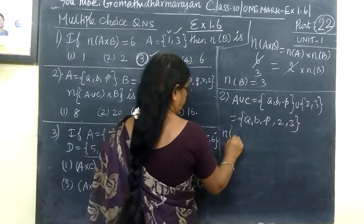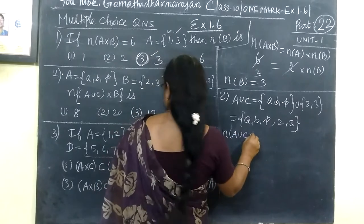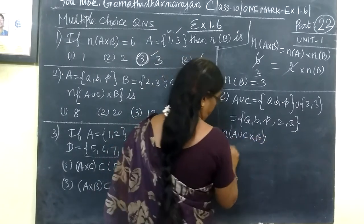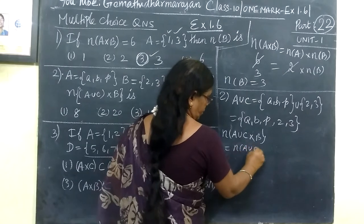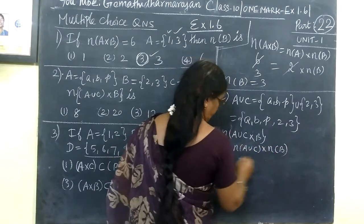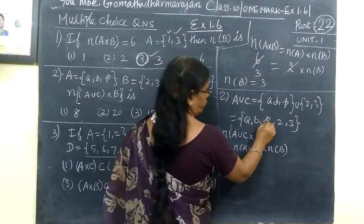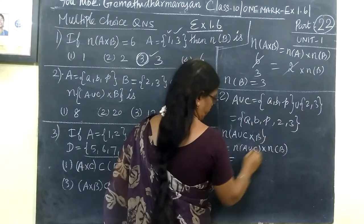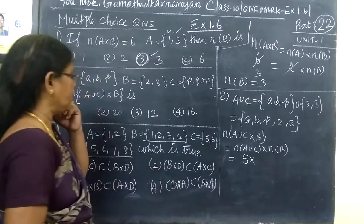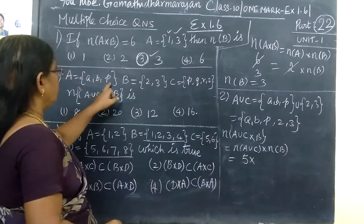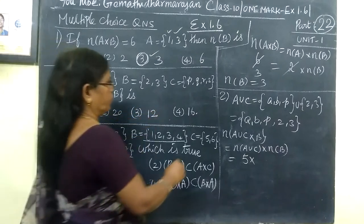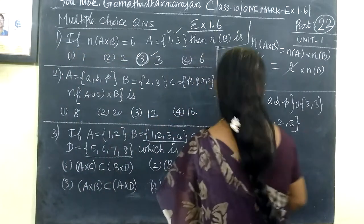So N(A∪C) cross B. Your formula: N(A∪C) into N(B). N(A∪C): 1, 2, 3, 4, 5, S. Then N(B): 1, 2, 3, 4, C — then it is known.